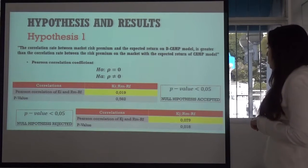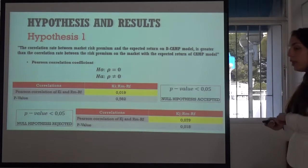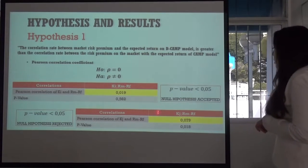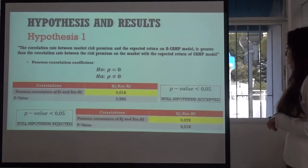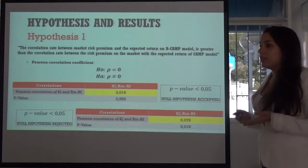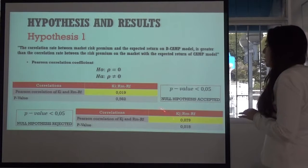we conclude that they accept the null hypothesis. In the second table, there is the correlation between the return calculated with DCAPM model and their risk premium. And as you can see, with p-value lower than the level of trust, the null hypothesis is rejected. And also, the Pearson coefficient is higher than the other one.